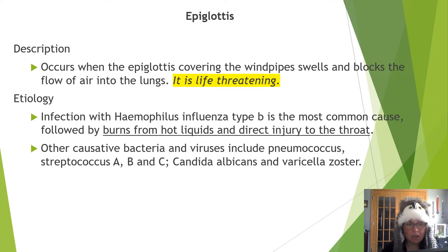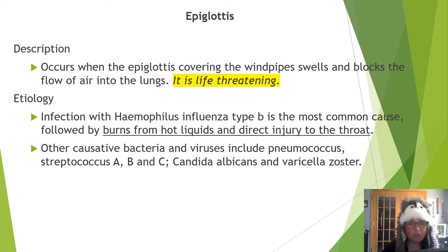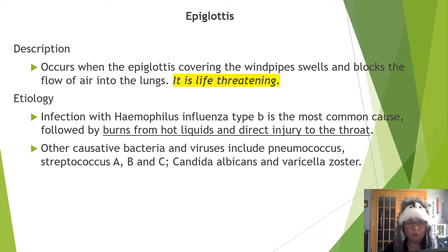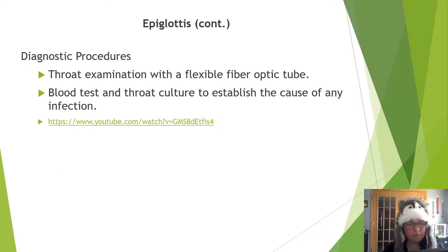Starting with the epiglottis — when this is inflamed, it can be life-threatening as this is the tissue that covers the windpipe and has potential to block airflow. Regarding infection, possibly Haemophilus influenzae type B. An infection can also set in following burns from hot liquids or direct injury to the throat. Other causative agents include bacteria and viruses like pneumococcus, strep A, B, or C, Candida albicans, or varicella zoster. A throat exam is needed using a flexible fiber optic camera. Blood tests and throat cultures would be collected to establish the cause.